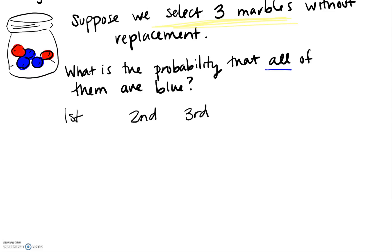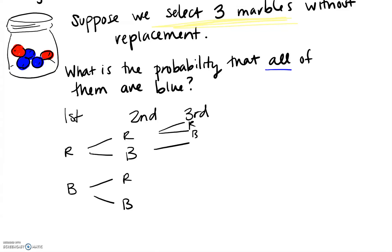For each of these marbles there are two options. The first marble could be red or it could be blue. The second marble could be red or blue, depending on where we started. And then the third marble, again, could be red or blue. So we have eight distinct outcomes that could happen at the end of this sampling.